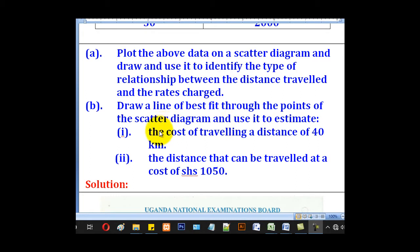Roman 1, the cost of traveling a distance of 40 kilometers, and Roman 2, the distance that can be traveled at a cost of 1,050 shillings.